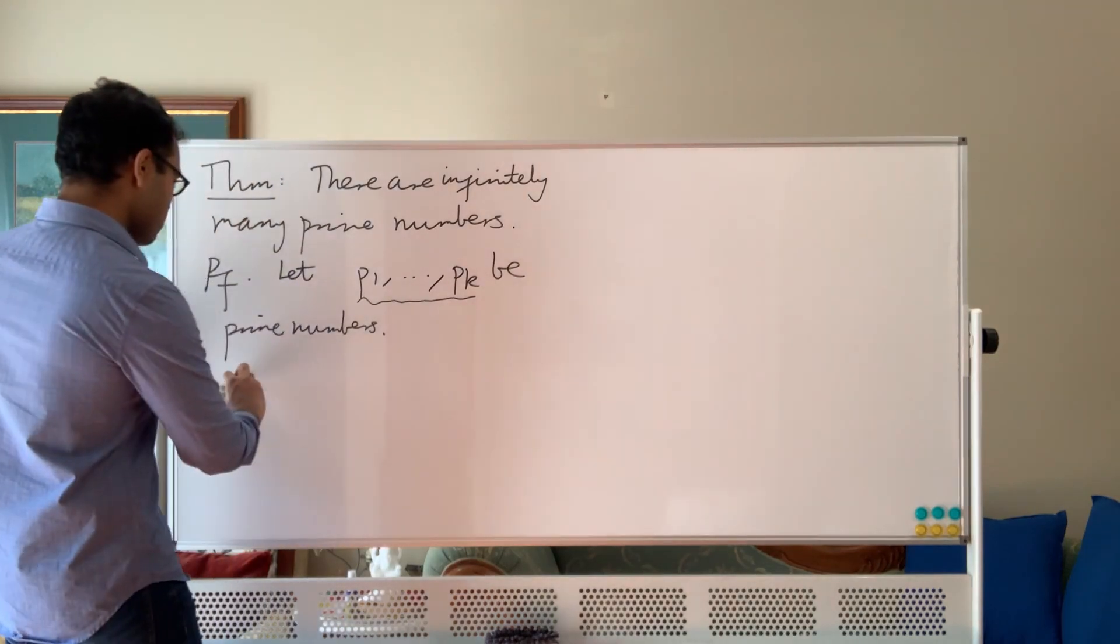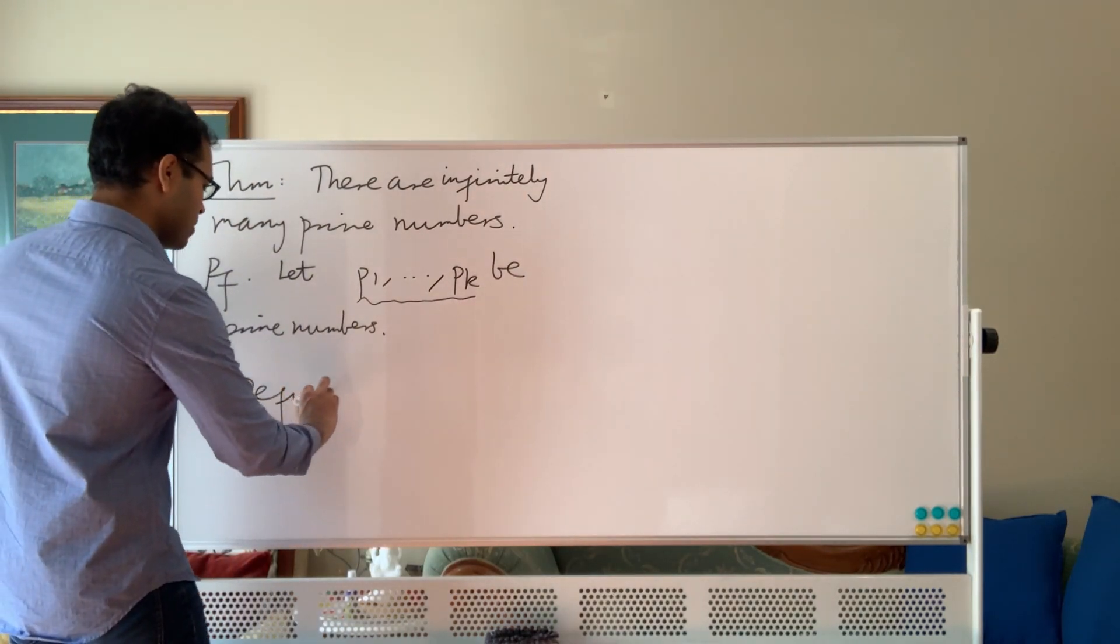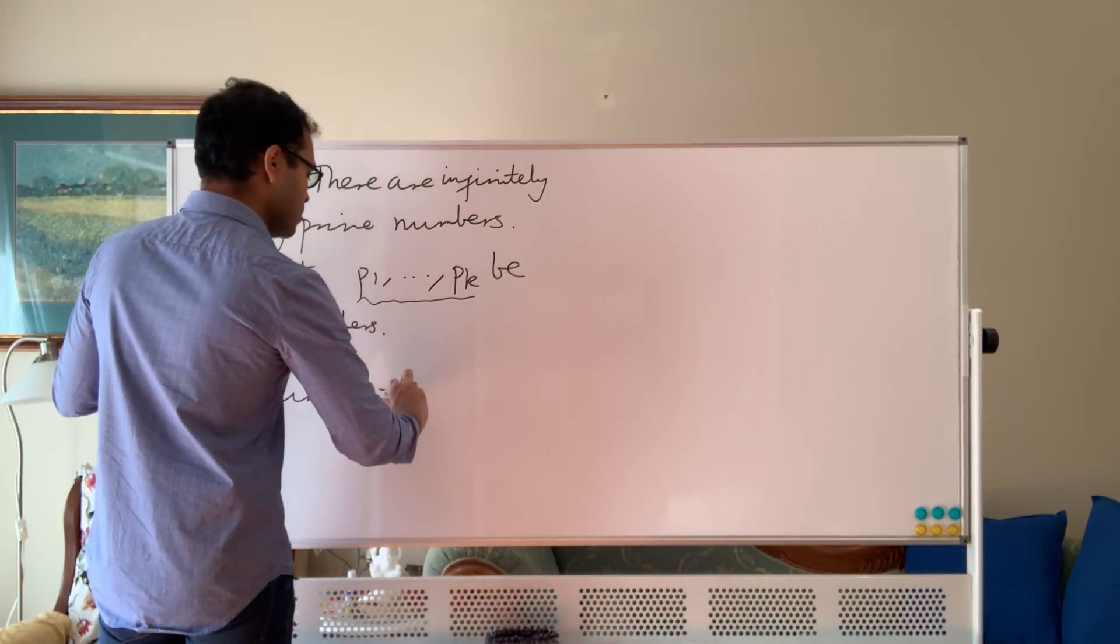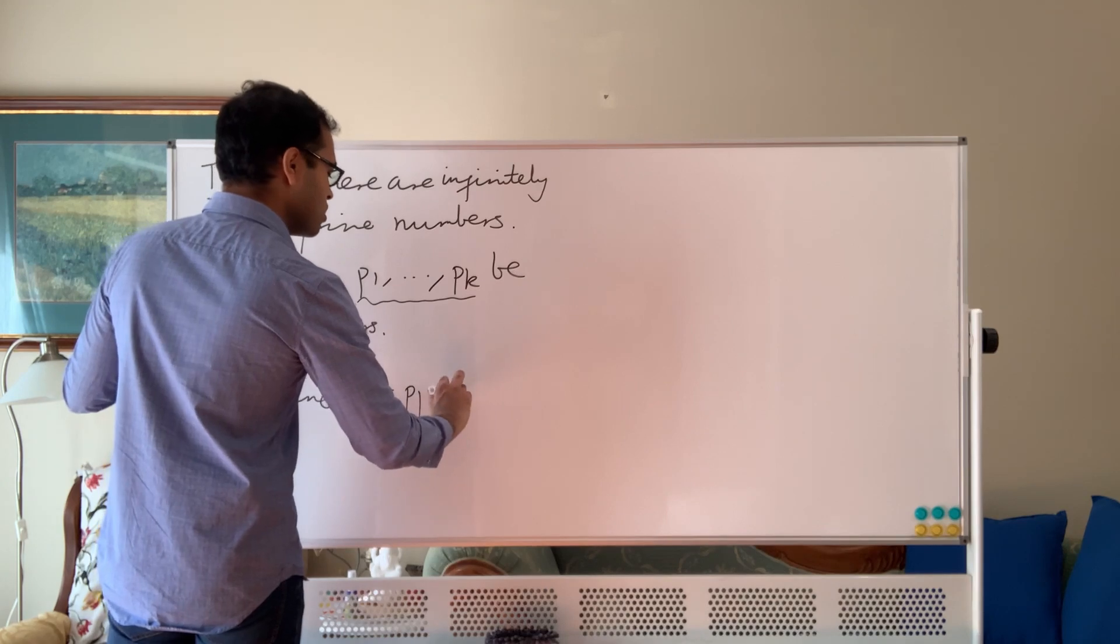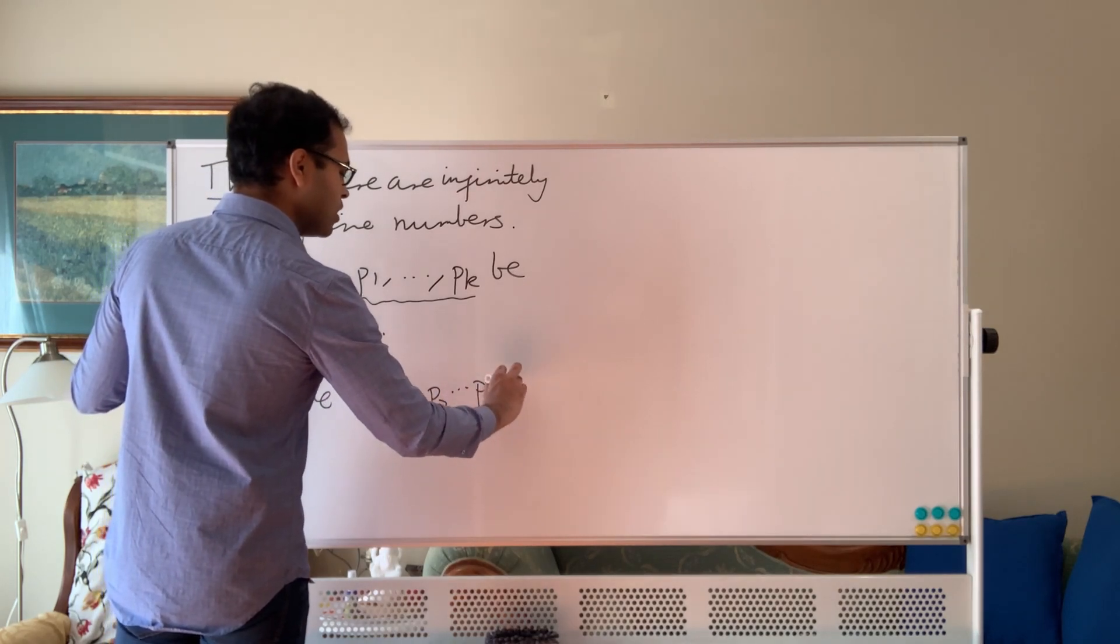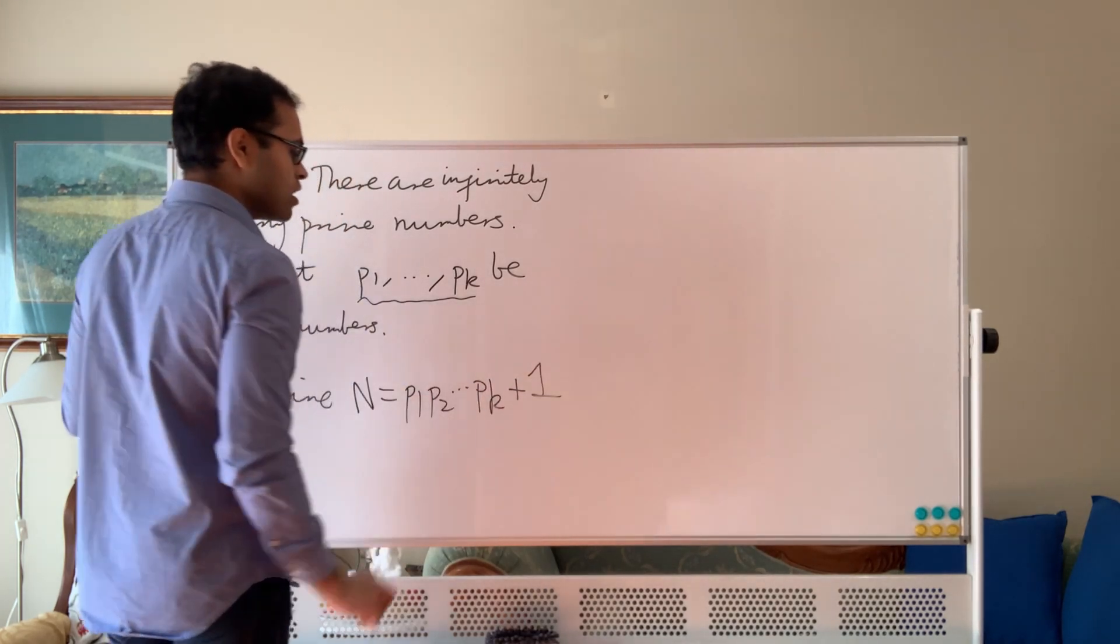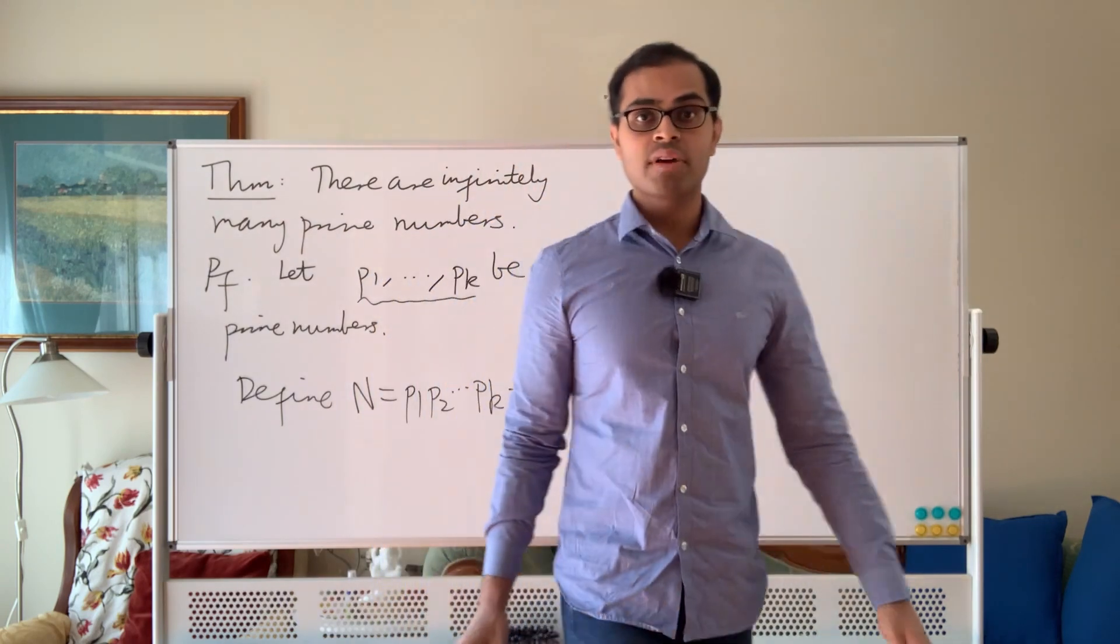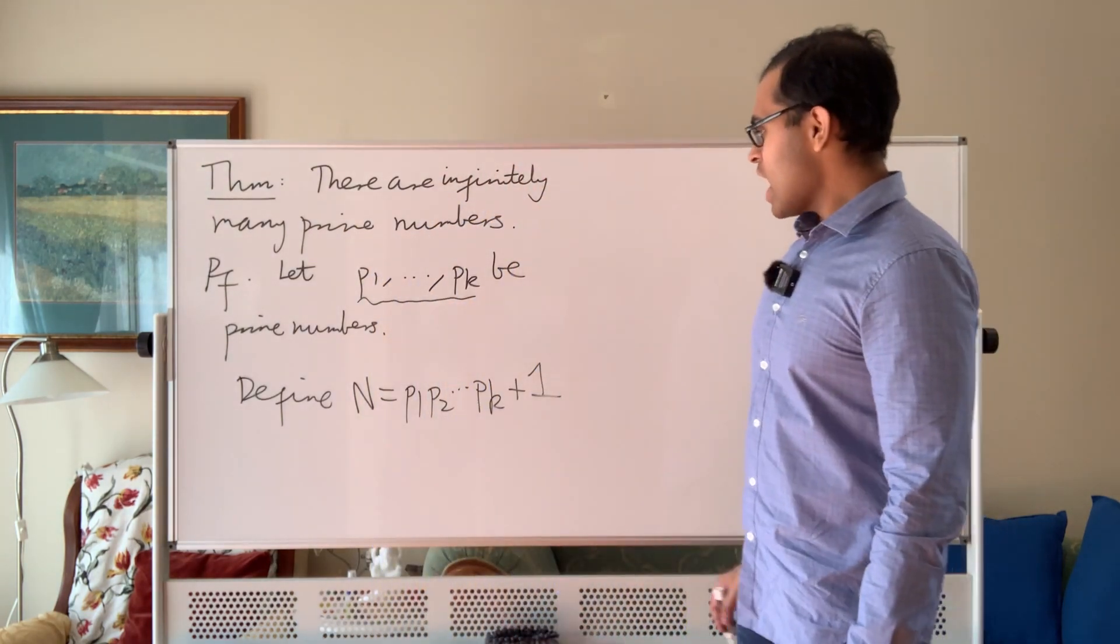So what we're going to do is we're going to define a number. Euclid says define the number N to equal P1 times P2 dot dot Pk, so the product of all the numbers in the list, and just add one to that. We're going to call this N.